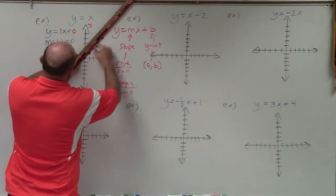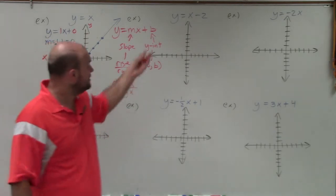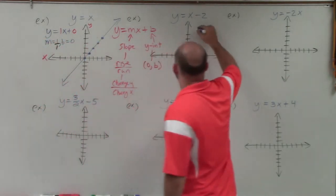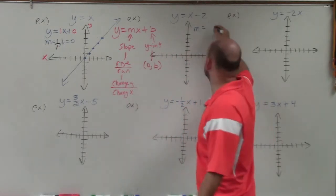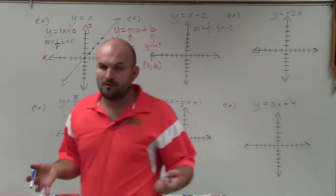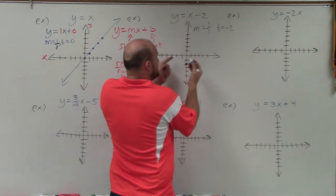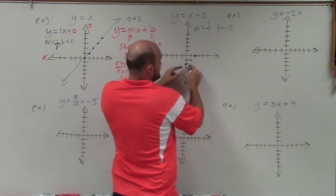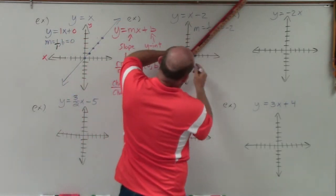Now for y equals x minus 2. Again, no explicit coefficient for x, but m equals 1, rewritten as 1 over 1, and b equals negative 2. Remember, b is a coordinate point, so the y-intercept is (0, negative 2). From there, we go up 1 over 1 — the change in y is positive 1, the change in x is positive 1. You only need two points, so go up 1 over 1 twice and then connect to get your graph.